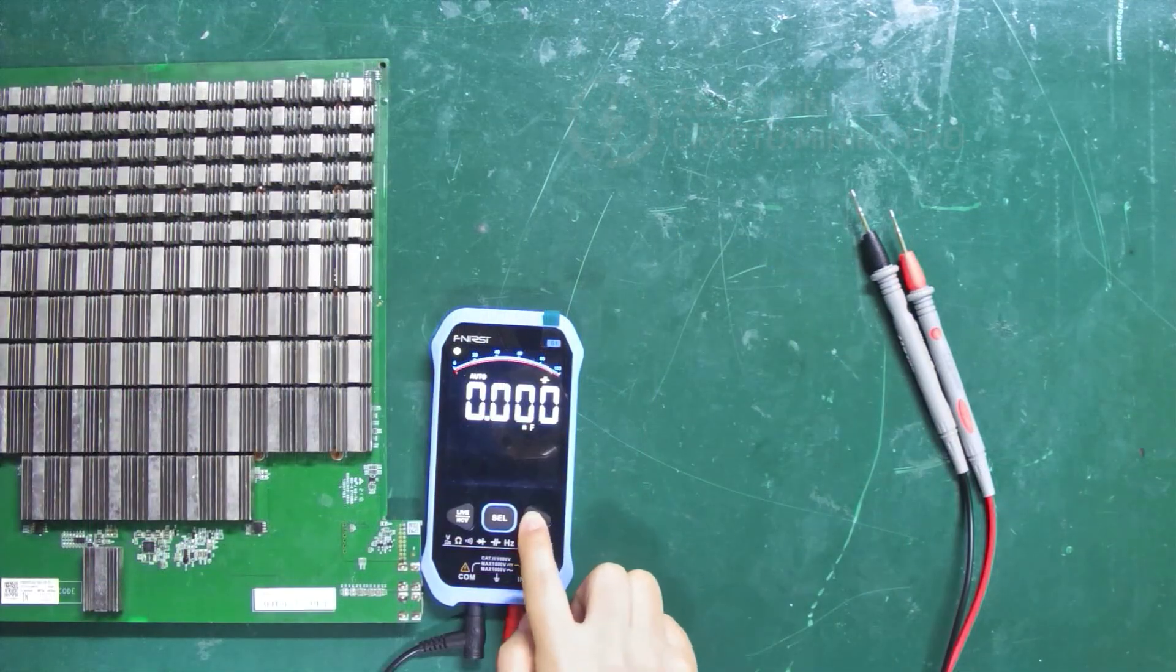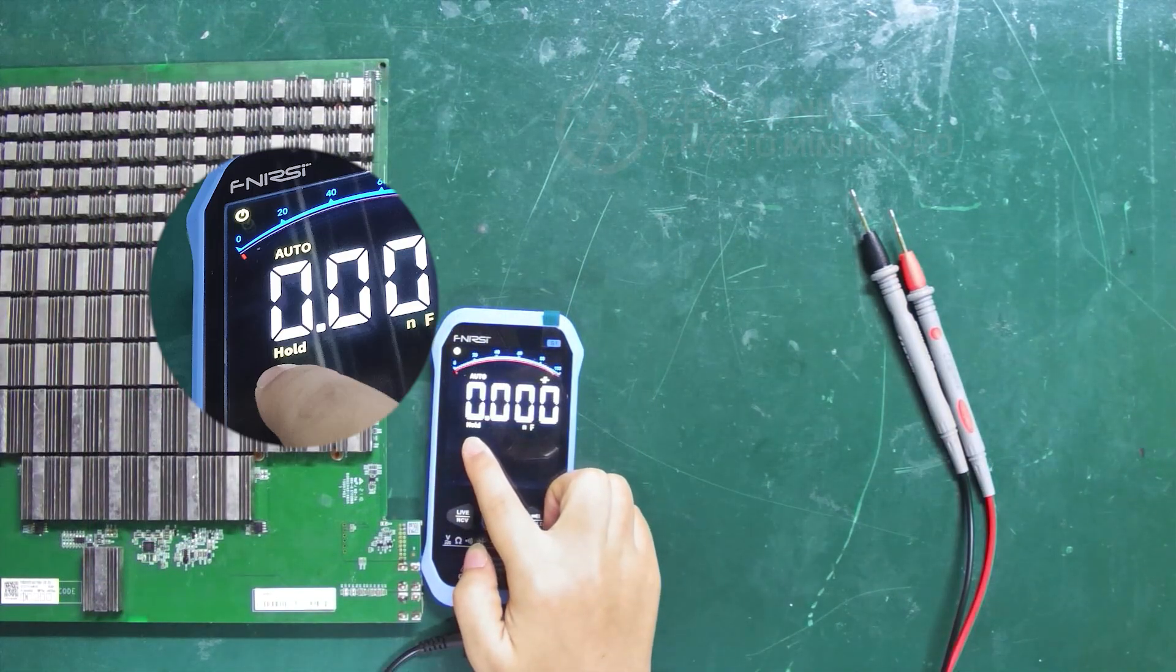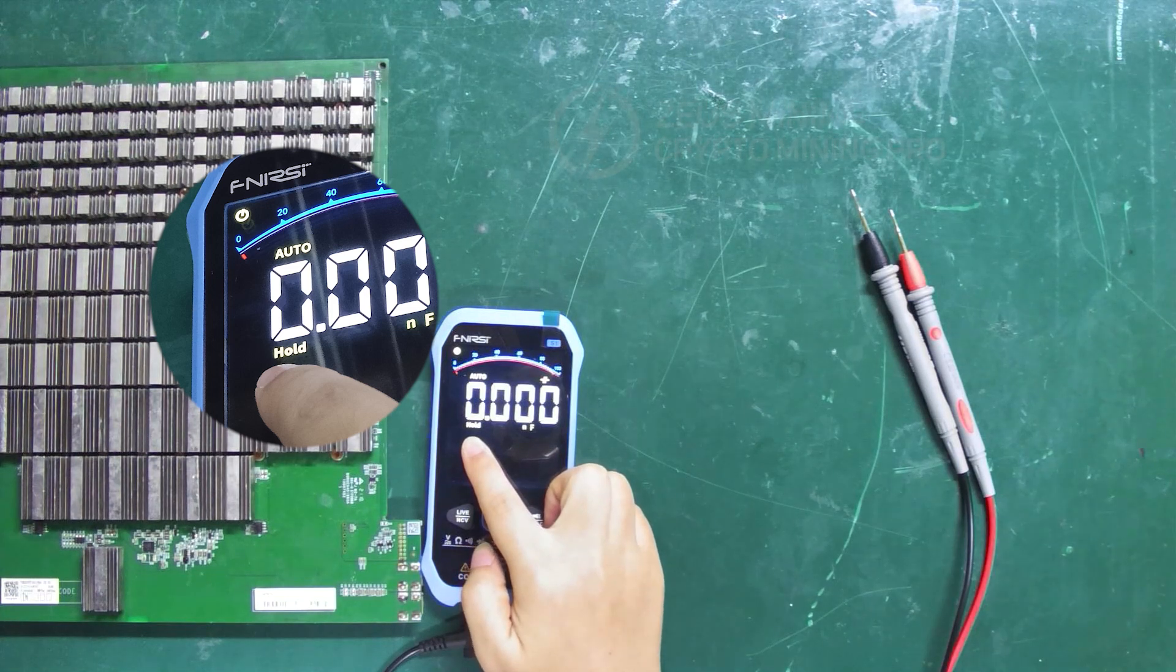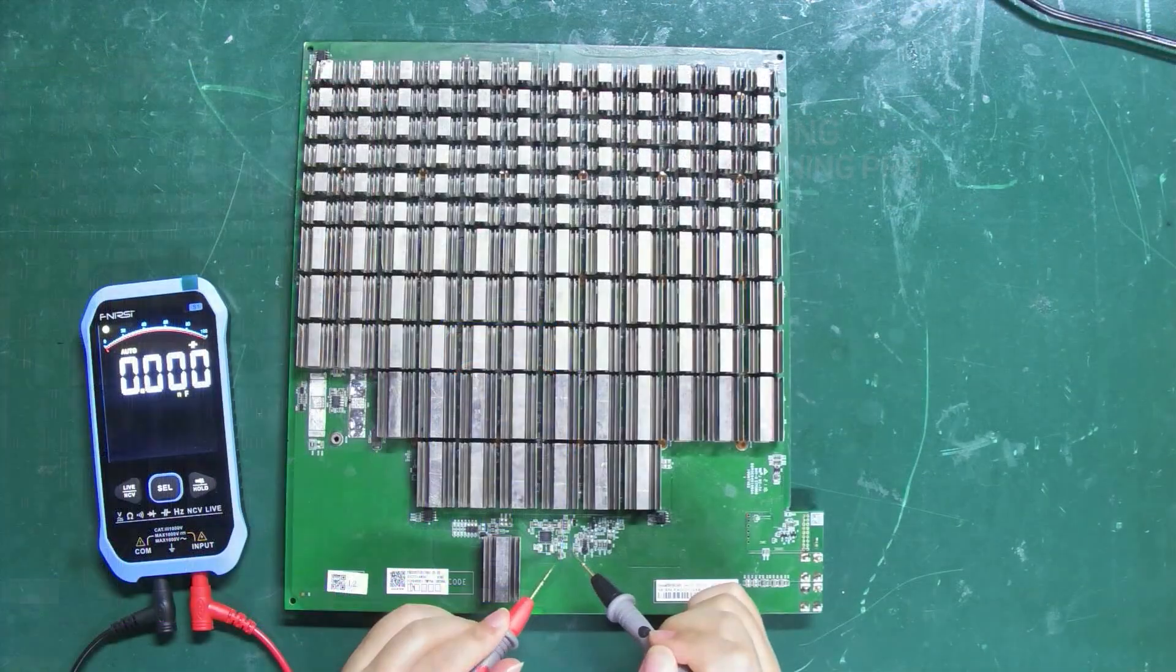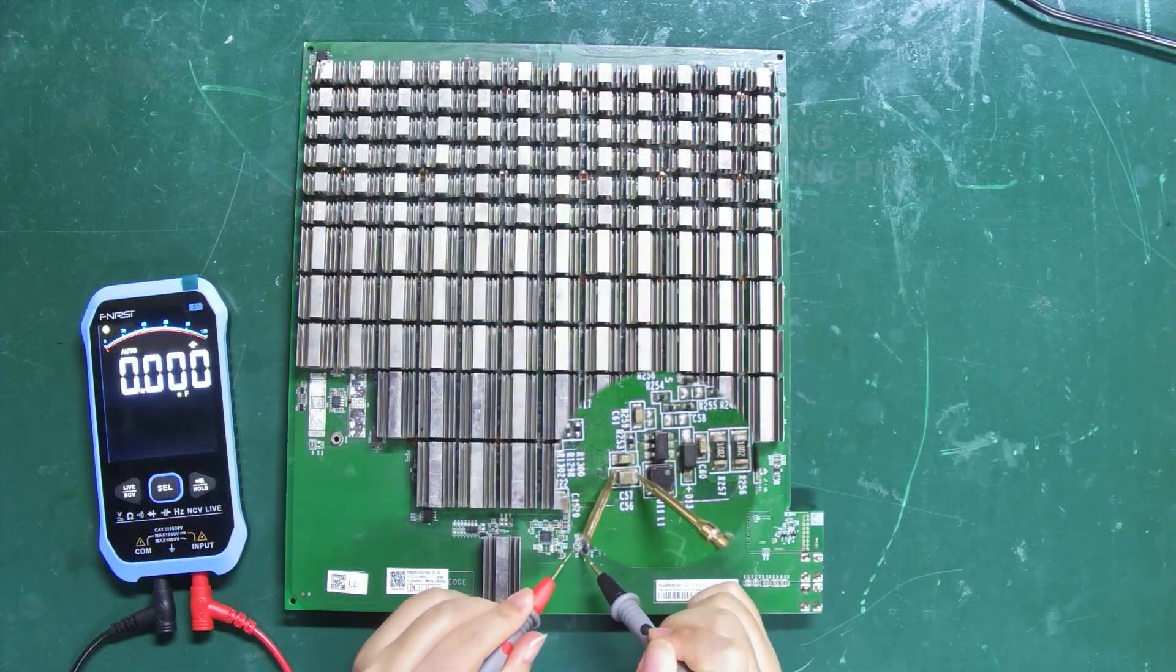Press the right button. HOLD will appear here. It's the data hold function. When we measure components, the measurement results can be saved through this function. Let's measure C56 here.